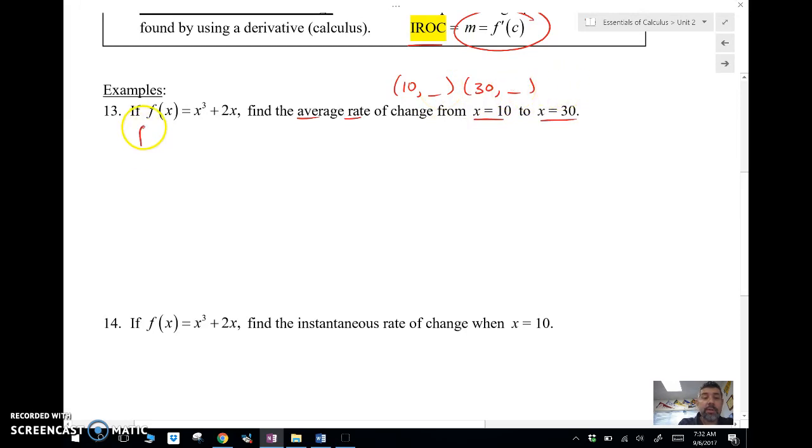So the first thing I'm going to do is find f of 10. That's going to give me 10 cubed plus 2 times 10, which is 1020. And I'm going to find f of 30, which is going to give me 27,060. And those are my y values.